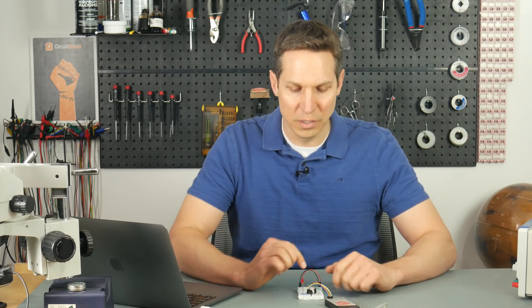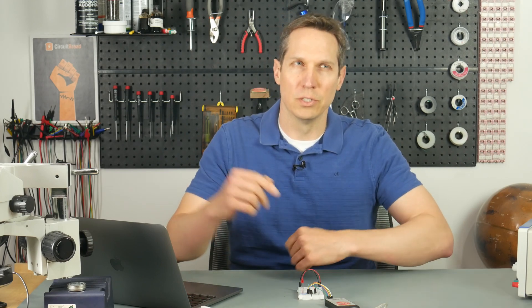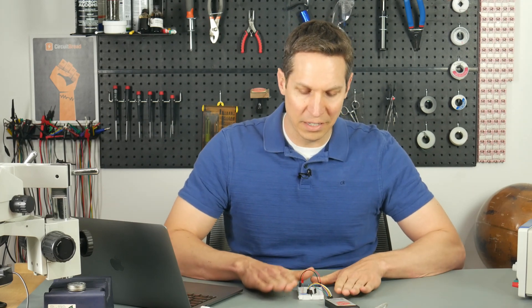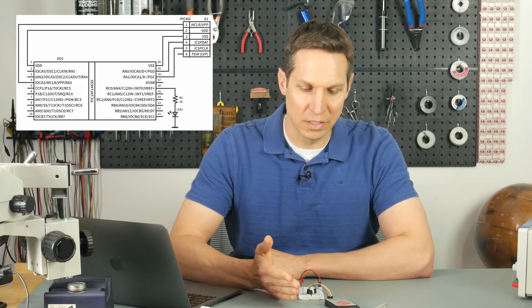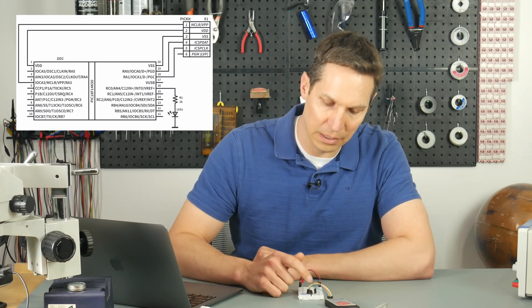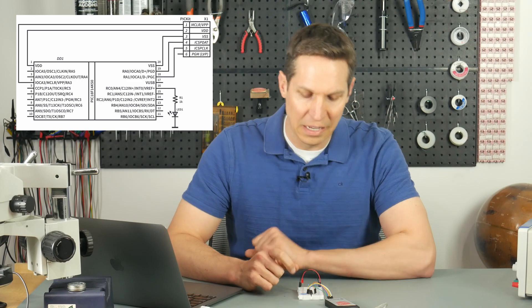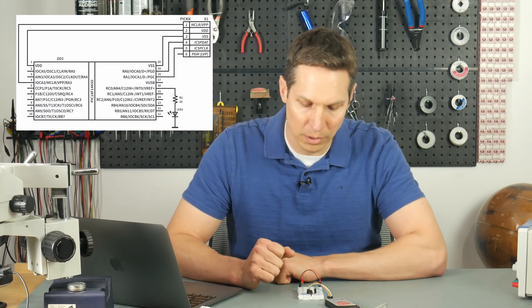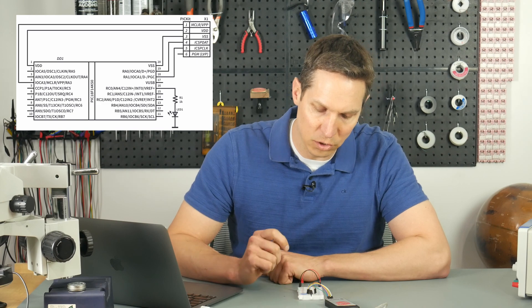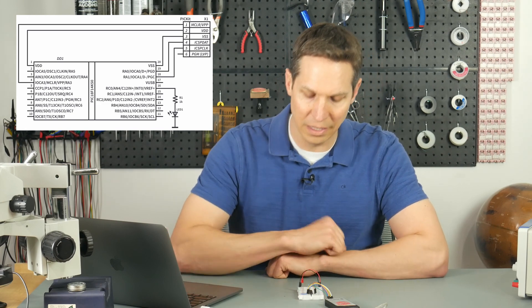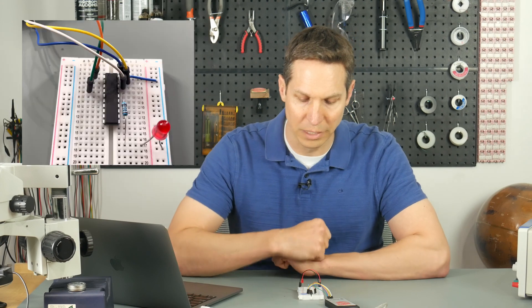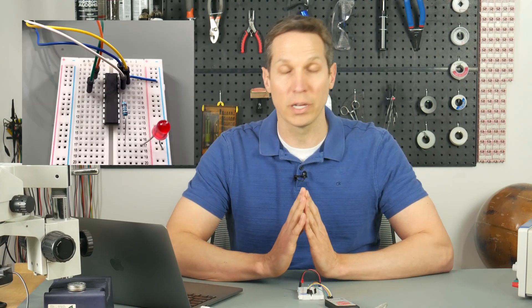Let's go over this just in case you didn't watch tutorial number two — if you didn't, go watch it. The schematic diagram has our PICKit4 connected to our PIC 18F 14K50, programming it and providing power. We have our resistor connected to pin 16 and then our LED connected from our resistor to ground. The schematic is extremely straightforward — all we are going to do is toggle it on and off every half second: turn it on, half second, turn it off, half second, turn it on.